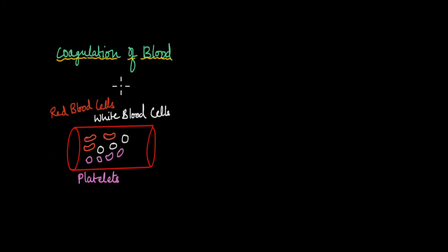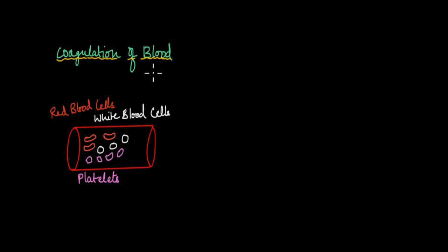Have you ever observed how after an injury your blood stops pouring out, and after a while the injury site is blocked by something, and then after a while even the injury disappears? The process by which blood flow is stopped from the site of injury is known as coagulation of blood. In today's video we're going to talk about the process by which blood coagulates or clots inside your body.